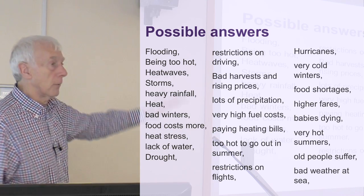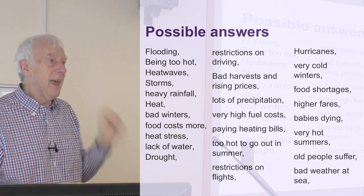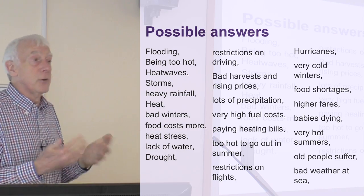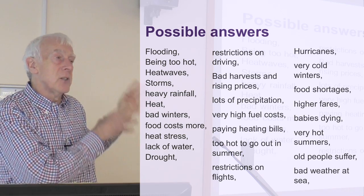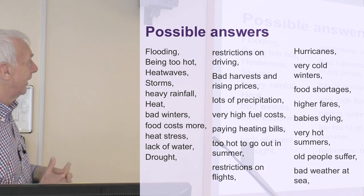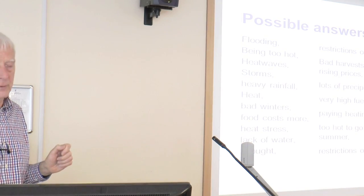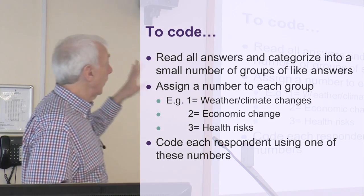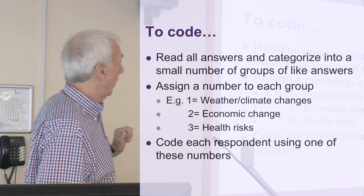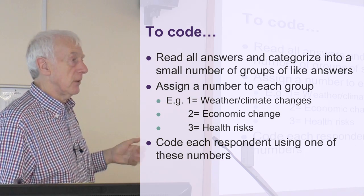The activity now is to start looking through all of these and find some way of categorising them. One of the things about being human is that we can't help categorising things — we look at things and think 'that's like that' and 'that's not like that.' So it's a natural thing to do, but you have to do it in a way that makes sense and is a good interpretation. I've done this already, and I think there are about three, maybe four different categories. I've assigned each answer into a category, and I've got three categories: things about weather and climate change, things about economic change, and things about health risks.